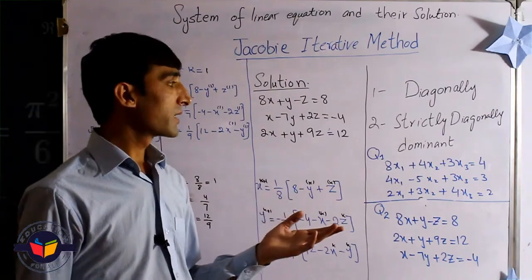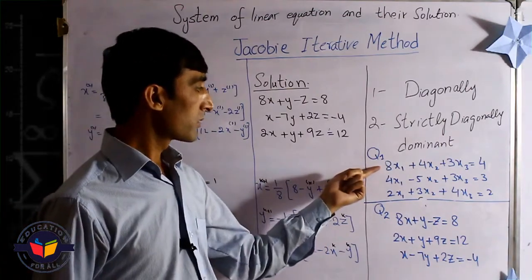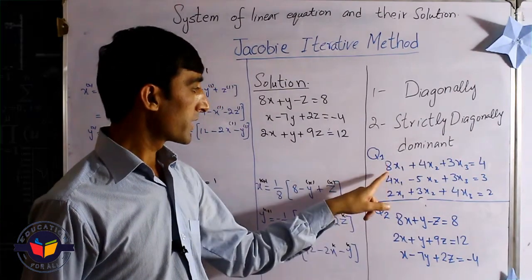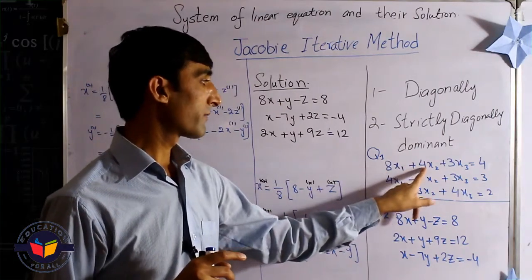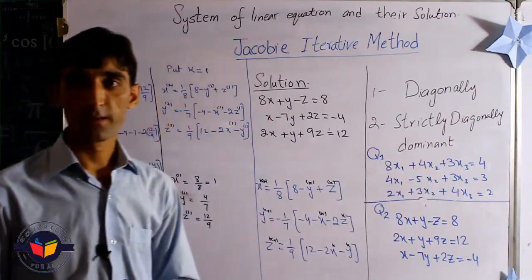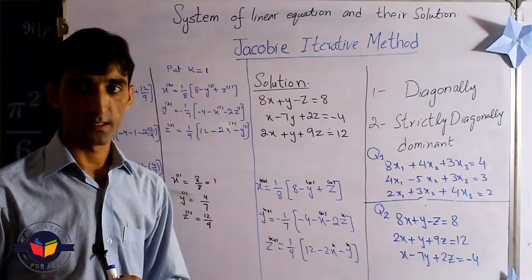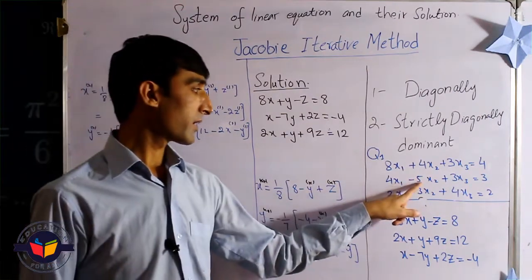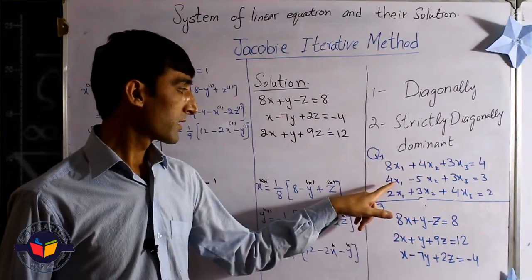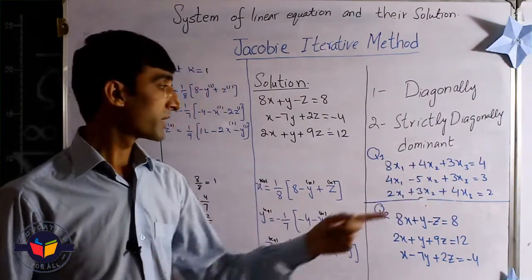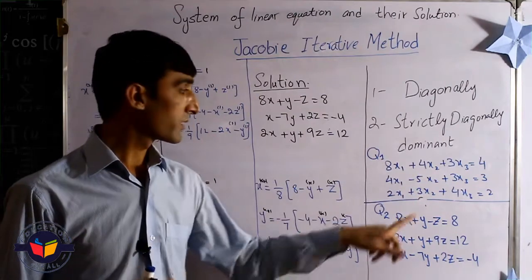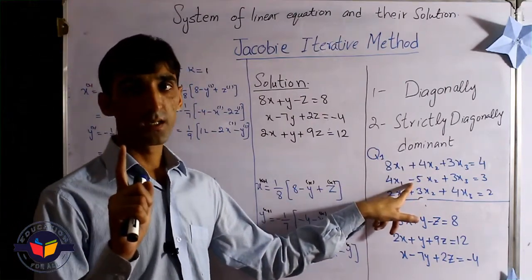What is meant by diagonally dominant? It means in the first row, the first element, that is 8, must be greater than the sum of 4 and 3. The sum of 4 and 3 is 7, and 8 is greater than 7, so the first row is diagonally dominant. In the second row, the second element should be greater than the sum of these two, but in this case 4 and 3 is 7 and here is 5. 7 is greater than 5. We ignore the minus sign because we discuss only the positive sign.